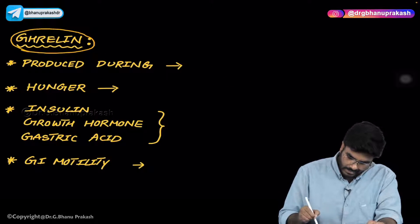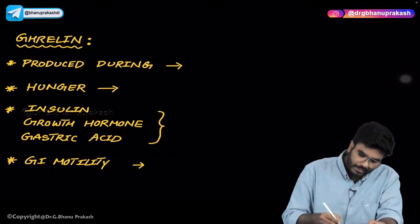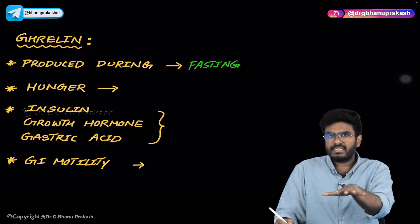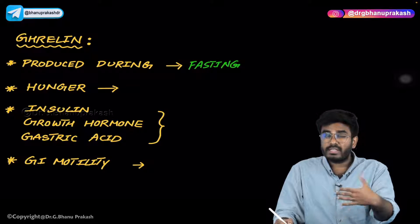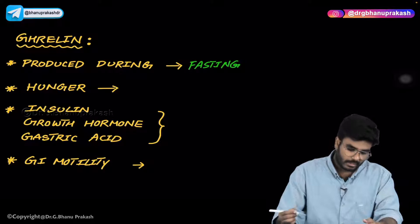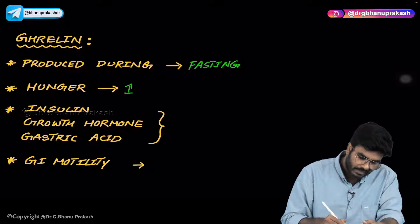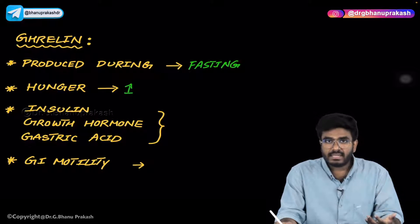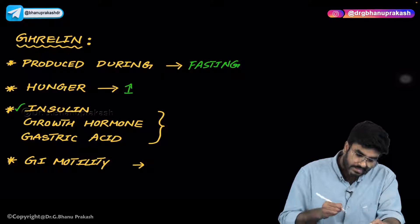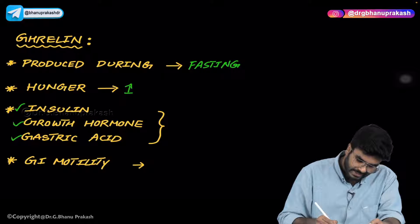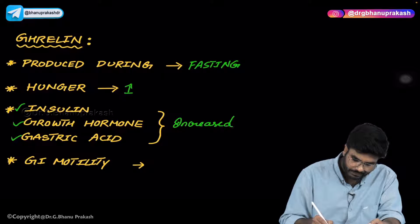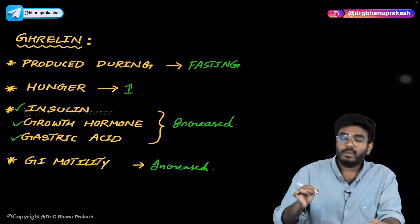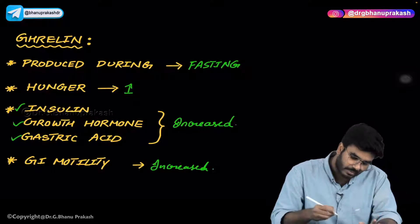Now let's talk about the GI hormone ghrelin. Ghrelin is produced in the body during fasting. During fasting states, ghrelin is produced. Think logically — during fasting, ghrelin is produced, so what might its function be? To increase blood glucose levels. Ghrelin increases blood glucose levels by increasing hunger. Whenever ghrelin is produced, you will have a feeling of hunger and will eat food. Ghrelin also increases insulin release, growth hormone release, and gastric acid release. GI motility is also increased. One important MCQ: ghrelin is a hormone especially produced during fasting.